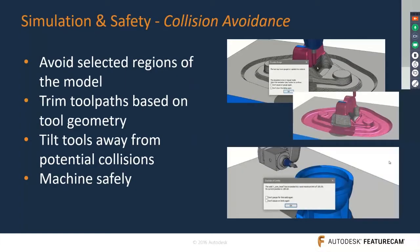FeatureCAM also provides collision detection options — it can determine whether tool overhangs are too large or whether to split the toolpath into various segments to avoid holder collisions. All of this functionality ensures the safety of the part and generates proper toolpaths for the component.